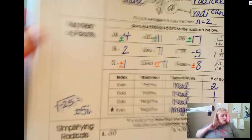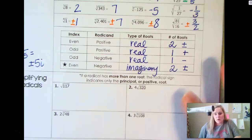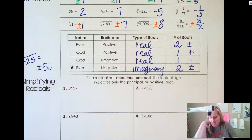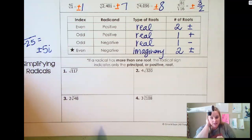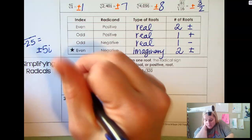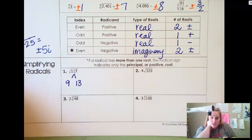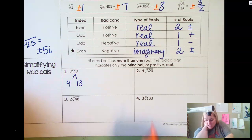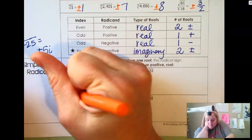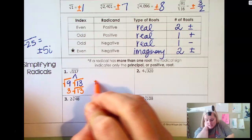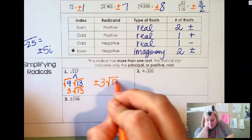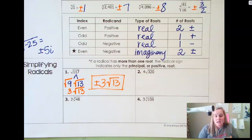So do you remember how to simplify radicals? There are different ways to do this. One of the most popular ways is to memorize your perfect squares and use factors that include a perfect square. For this one, the factors would be 9 and 13 — 9 is a perfect square. 9 times 13 gives me 117. The square root of 9 is 3; the square root of 13 stays in the house. So your answer is plus or minus 3 square roots of 13.